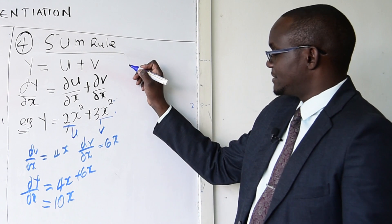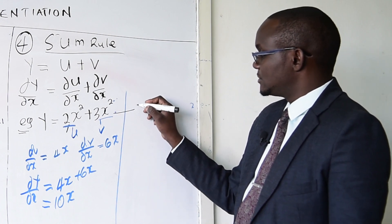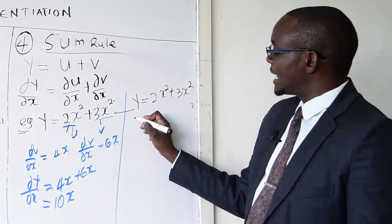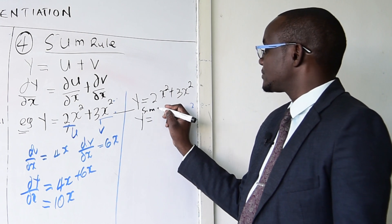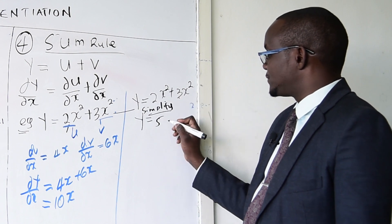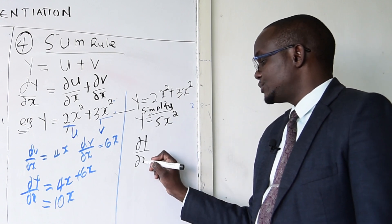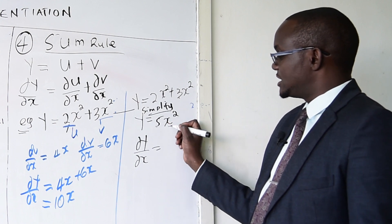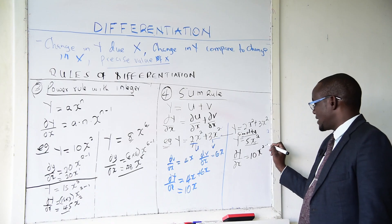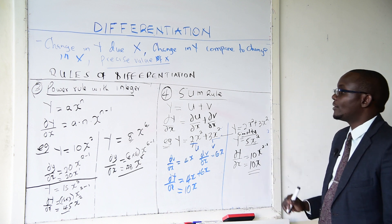To prove this is right, start by simplifying: 2x^2 plus 3x^2 simplifies to 5x^2 since 2 plus 3 is 5. Then dy/dx is found by differentiating 5x^2: take 2 times 5 which is 10, and the new power is 2 minus 1, giving 10x raised to power 1. This confirms our answer.